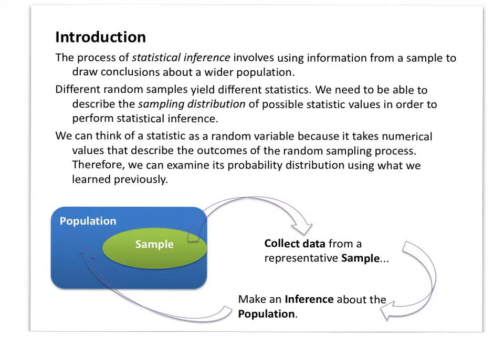When you take random samples, you're going to get different statistics just by the probability of things — you're going to get different answers. You've got to be able to calculate different statistics and figure out which are valid ones to predict what's going on for the population. So we need to look at the sampling distribution of all possible statistical values to be able to do a statistical inference.